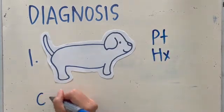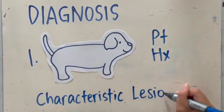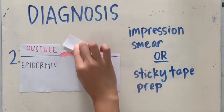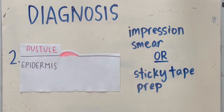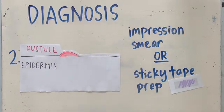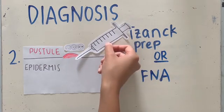Pyoderma is often diagnosed according to patient history and clinical signs such as the presence of characteristic lesions. Skin cytology is also useful in confirming the presence of cocci bacteria and inflammatory cells, predominantly neutrophils. Impression smears can be performed to sample a pustule or papule. Acetate tape preparations are more appropriate for dry lesions or tricky sampling sites such as the interdigital spaces. Other sampling methods such as fine needle aspiration or a swab smear can also be performed on fresh intact pustules.